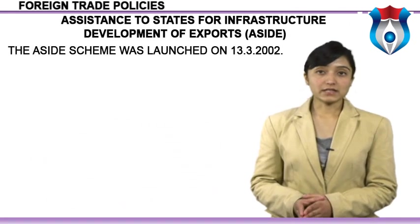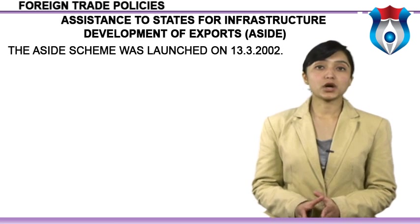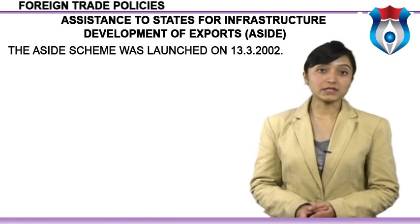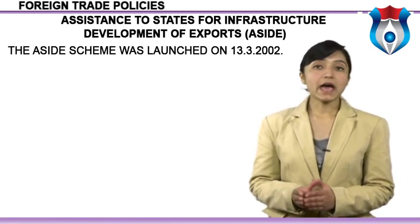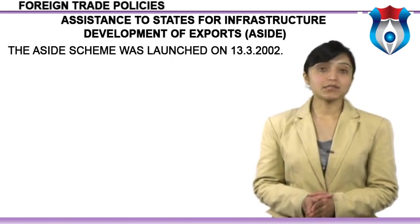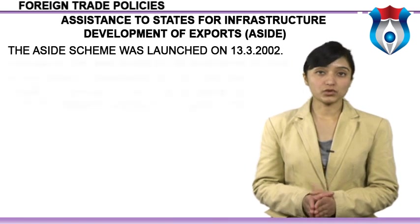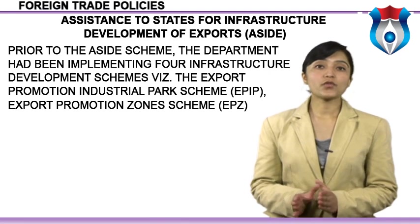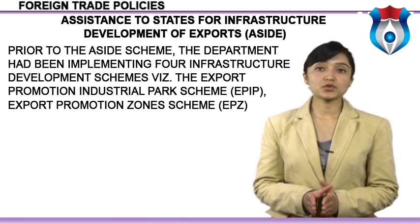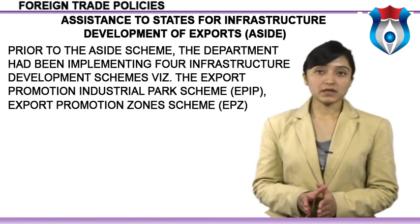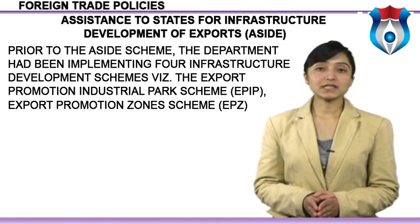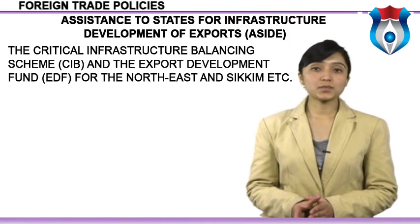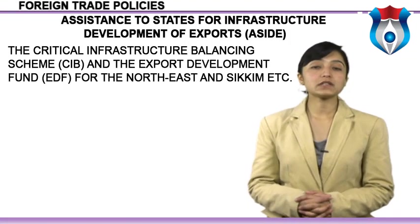The ASIDE scheme was launched on 13th March 2009. The allocation for financial year 2012-2013 is INR 800 crore, and the allocation as per revised estimates is INR 655 crore. Prior to the ASIDE scheme, the department had been implementing four infrastructure development schemes: the Export Promotion Industrial Park scheme (EPIP), the Export Promotion Zone scheme (EPZ), the Critical Infrastructure Balancing scheme (CIB), and the Export Development Fund (EDF) for the northeast and Sikkim.